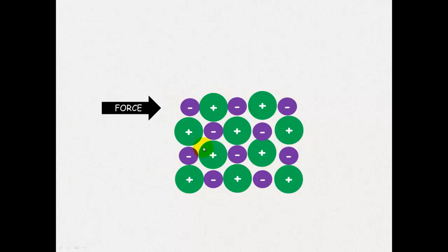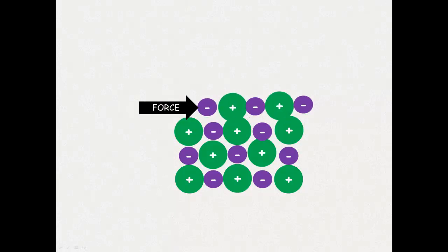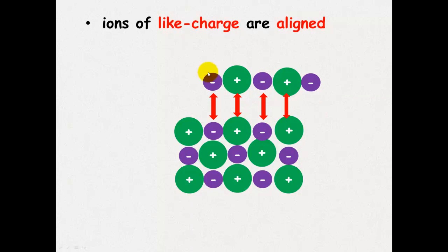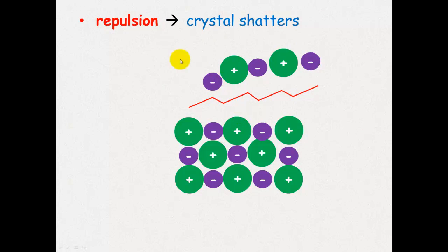Remember the lattice structure is normally three-dimensional. Well, it is three-dimensional, but I've just represented it here two-dimensionally to explain what happens when a force is applied. So here's my force and it pushes. And what happens here is that the like charges align to one another and that causes those like charges to repel one another. And this repulsion causes the crystal to shatter. And that's what causes the brittleness.